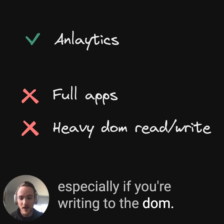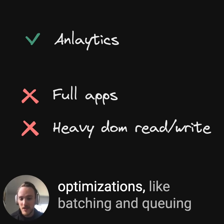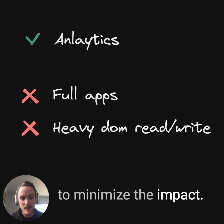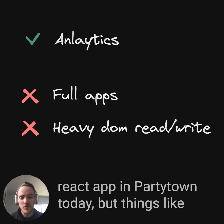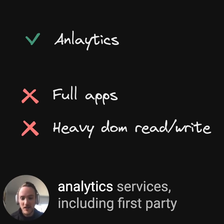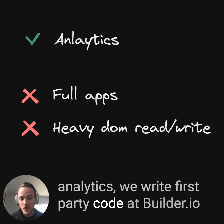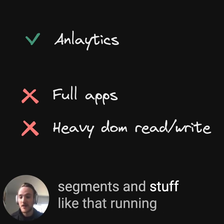Especially if you're writing to the DOM, there can be a small cost. We do some smart performance optimizations like batching and queuing to minimize the impact, but we wouldn't say you should run your React app in PartyTown today. But things like Google Analytics and various other tracking analytics services, including first-party analytics — we write first-party code at builder.io as well.